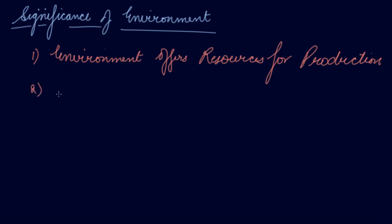Second, it sustains life. The environment includes sun, soil, water, and air which are essential ingredients for us to live. This is very important for our living. Absence of these elements in the environment implies the end of our life. If we don't get water, air, sunlight, and food, will we be able to live? No. So, environment helps us to sustain life.